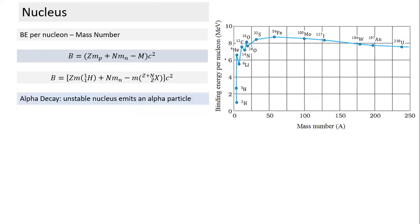From binding energy, the more relevant quantity is binding energy per nucleon. Dividing binding energy by mass number gives binding energy per nucleon. As mass number increases it gradually increases, reaches a maximum in a certain range, and then starts decreasing. This particular shape of the curve is responsible for atomic energy. Most heavy nuclei are unstable — they change into a relatively more stable form, and when the nucleus changes, the element itself changes.